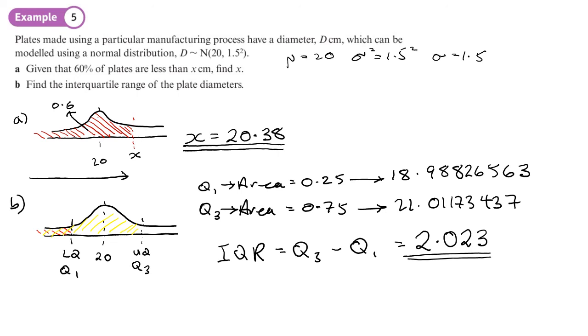Interquartile range just means areas of 25% and 75%. You should now be in a position where you can do exercise 3C on pages 46 to 47.